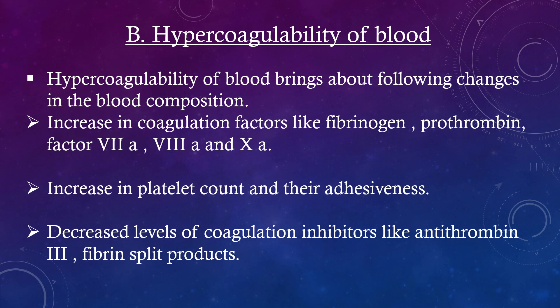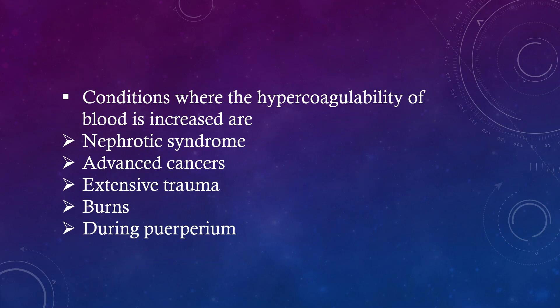Hypercoagulability of blood brings about the following changes: increase in coagulation factors like fibrinogen, prothrombin, factor 7a, 8a and 10a; increase in platelet count and their adhesiveness; and decreased levels of coagulation inhibitors like antithrombin-3 and fibrin split products. Conditions where hypercoagulability is increased include nephrotic syndrome, advanced cancers, extensive trauma, burns, and the puerperium period.